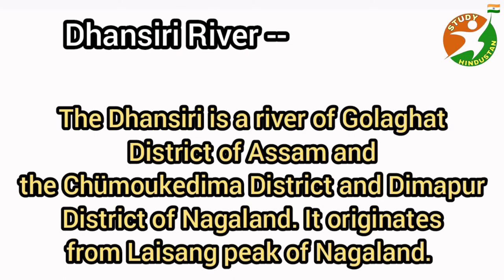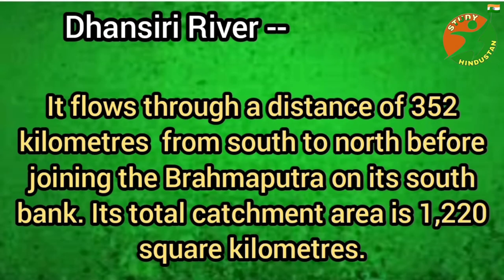The Dhansiri river is a river of Golaghat district of Assam and the Chumoukedima district and Dimapur district of Nagaland. It originates from the Laisang peak of Nagaland. The Dhansiri river flows through a distance of 352 kilometers from south to north before joining the Brahmaputra on its south bank. Its total catchment area is 1220 square kilometers.